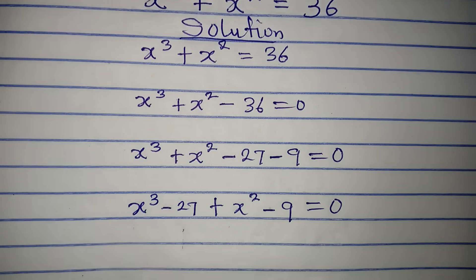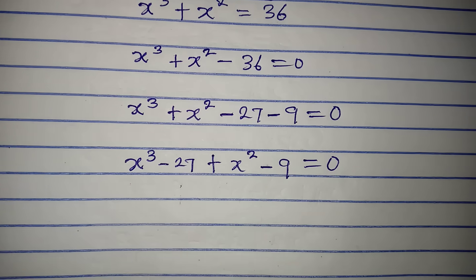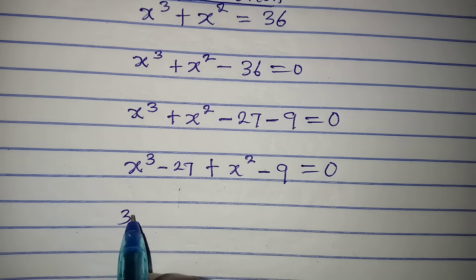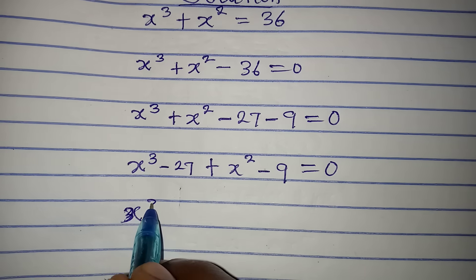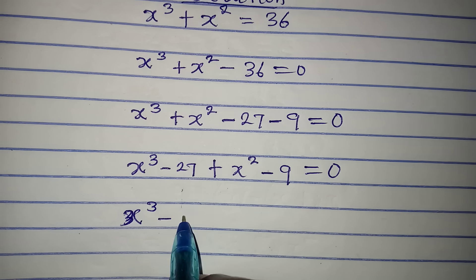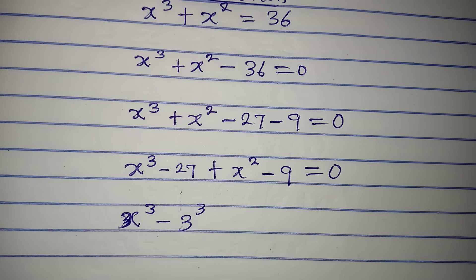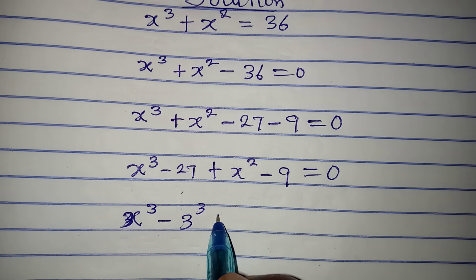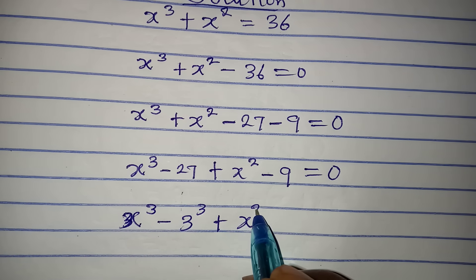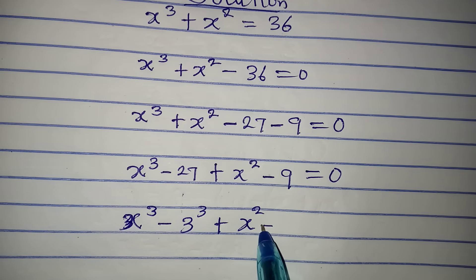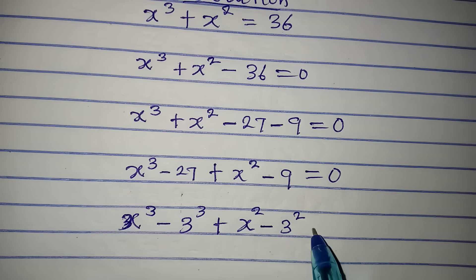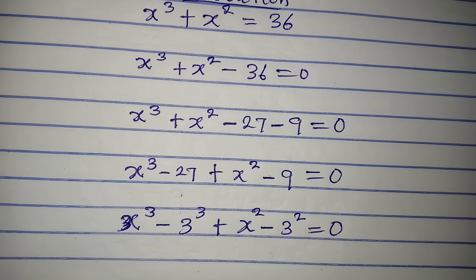Now we can see that they are matching. So x to the power of 3 minus 27 is 3 to the power of 3, plus x squared minus 3 to the power of 2, and this is equal to 0.